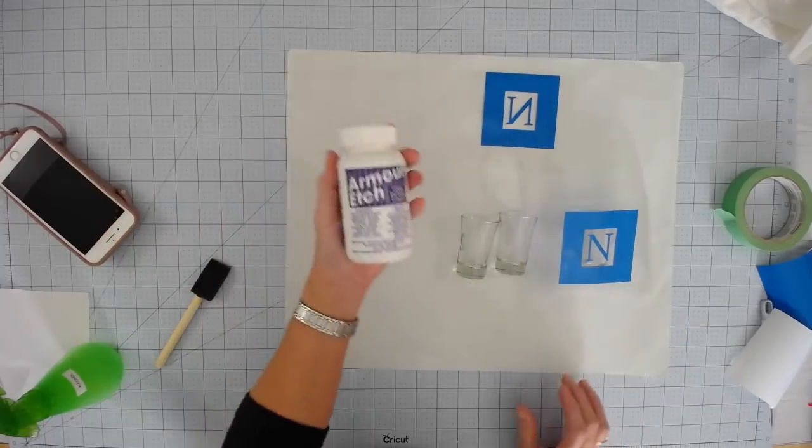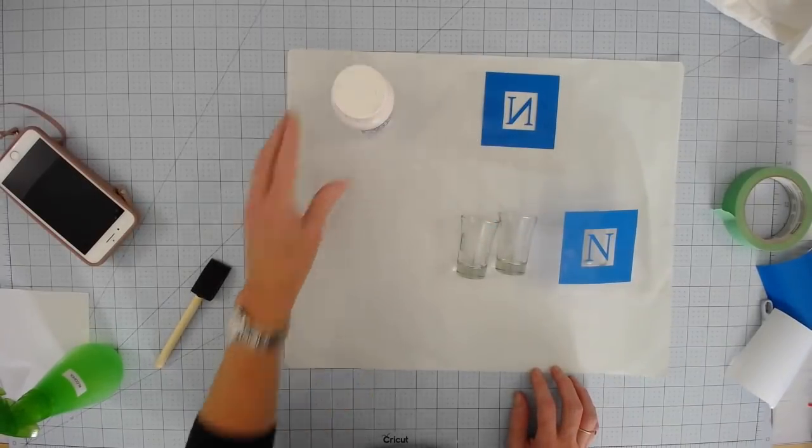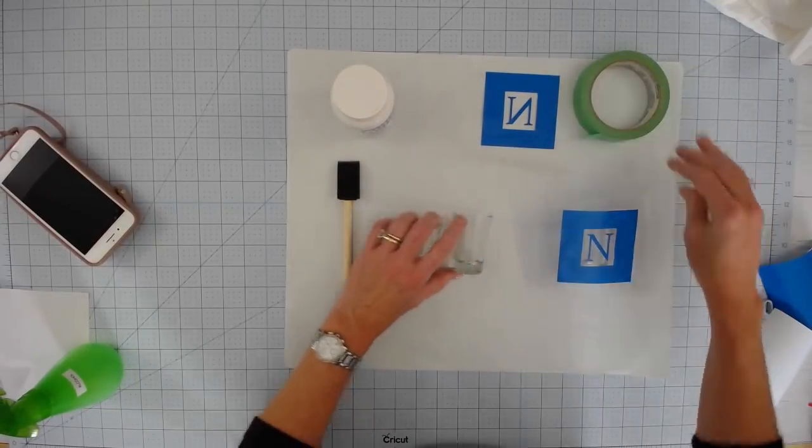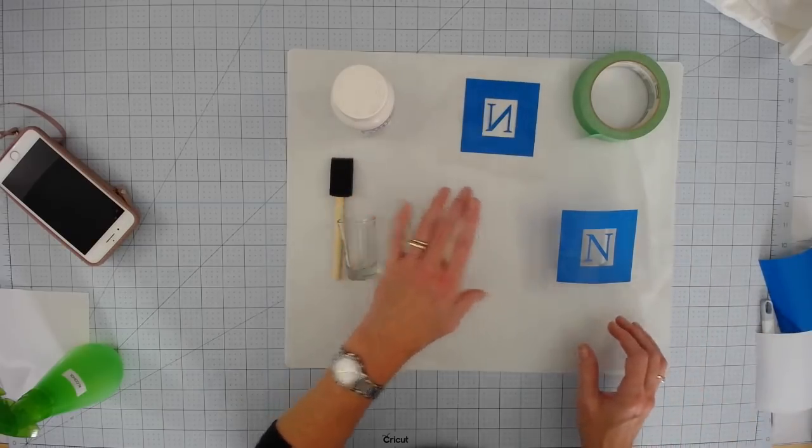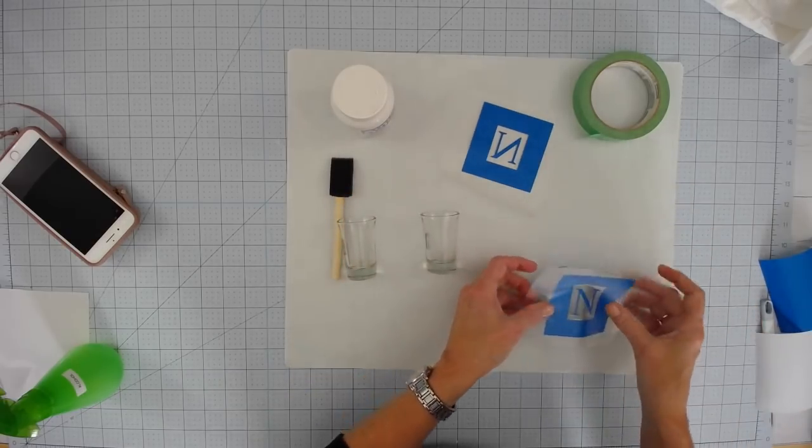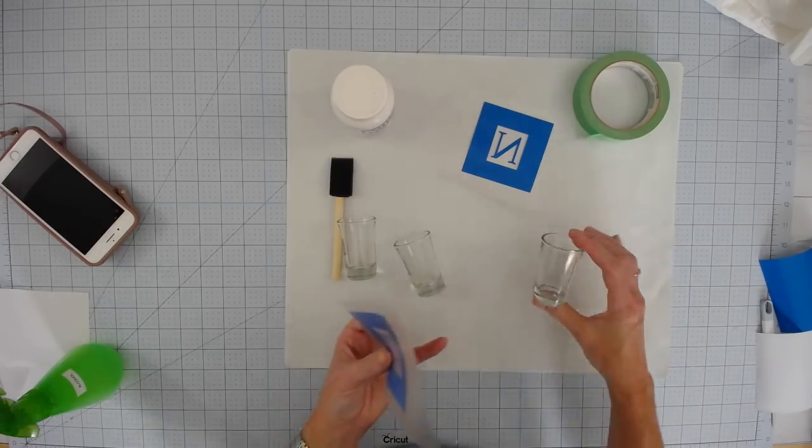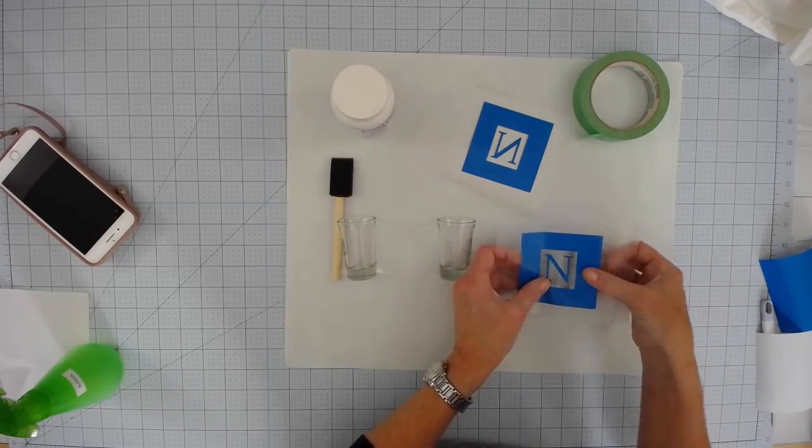The first thing we're going to need is our armor etch. I picked this up at Hobby Lobby. You can get it at Michael's, Joanne's, I think almost all of them have it. I'm going to use a foam brush. You might also want to have some masking tape or some kind of tape in case your decal isn't quite as big as mine. I made mine extra big so that I could protect the part of the glass that I don't want to get the armor etch on.